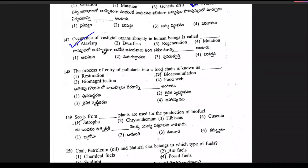Question 147: the occurrence of vestigial organs abruptly in human beings is called atavism. Question 148: the process of entry of pollutants into a food chain is known as bioaccumulation. Option 2 is the right answer.